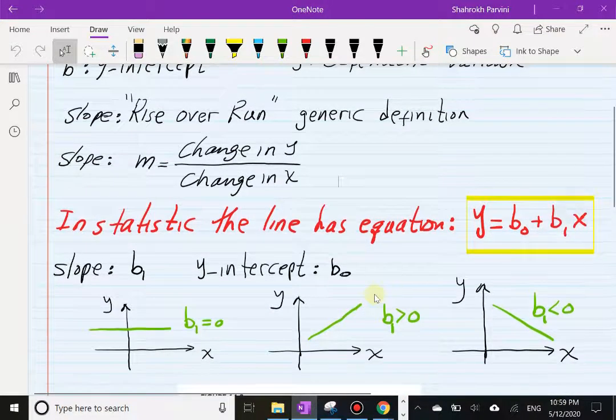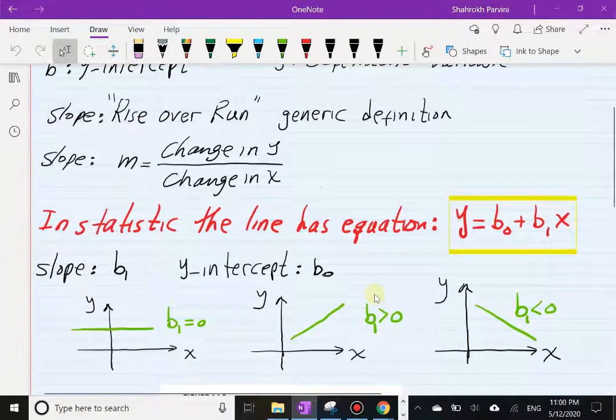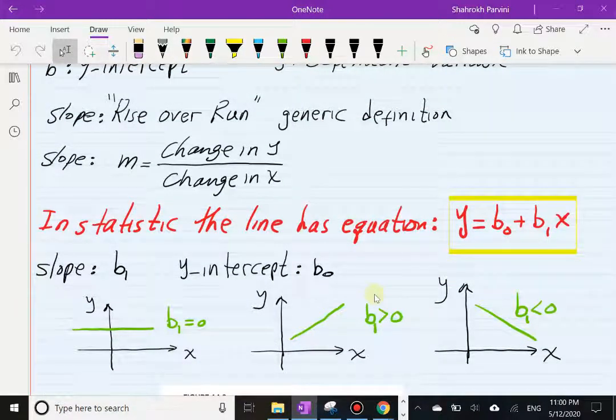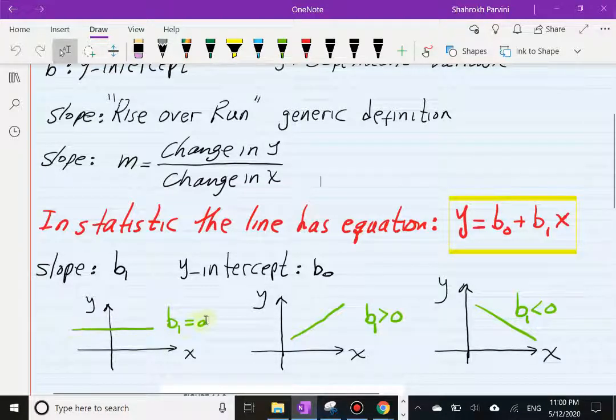When it comes to slope itself, we can look at three situations. The slope could be 0, which means the line is flat lining. That's this first case, you have a flat line, slope 0, because as you move from one point to another point there is a change in x but there is no change in vertical direction, so that change in y is 0 over some number in x, so that makes it 0.